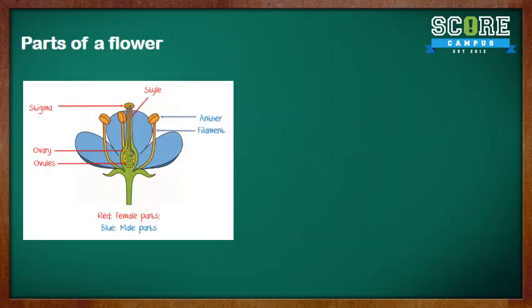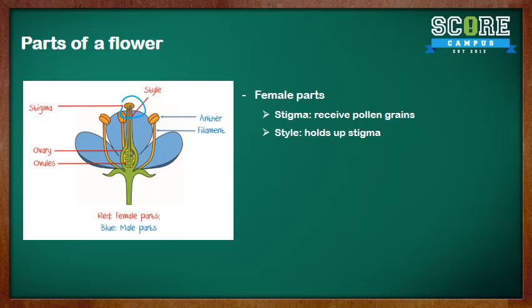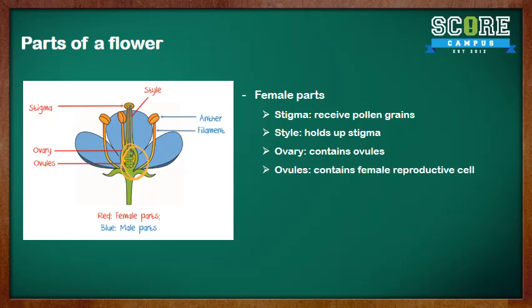Now let's look at the female parts. We have the stigma, which receives the pollen grains. Then there is the style, which holds up the stigma. The ovary is the entire component that contains the ovules — the individual structures you can see here. The ovules contain the female reproductive cell.